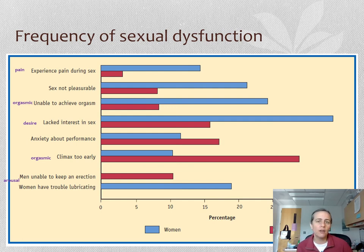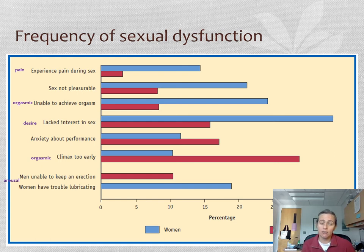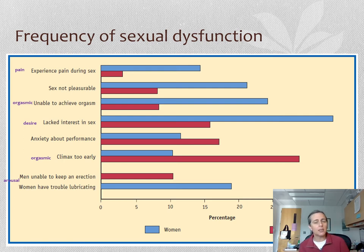Trouble with the arousal or vasocongestive phase includes difficulty maintaining an erection — erectile dysfunction — as well as, for female-bodied people, difficulty with lubrication, which is the corollary to that.